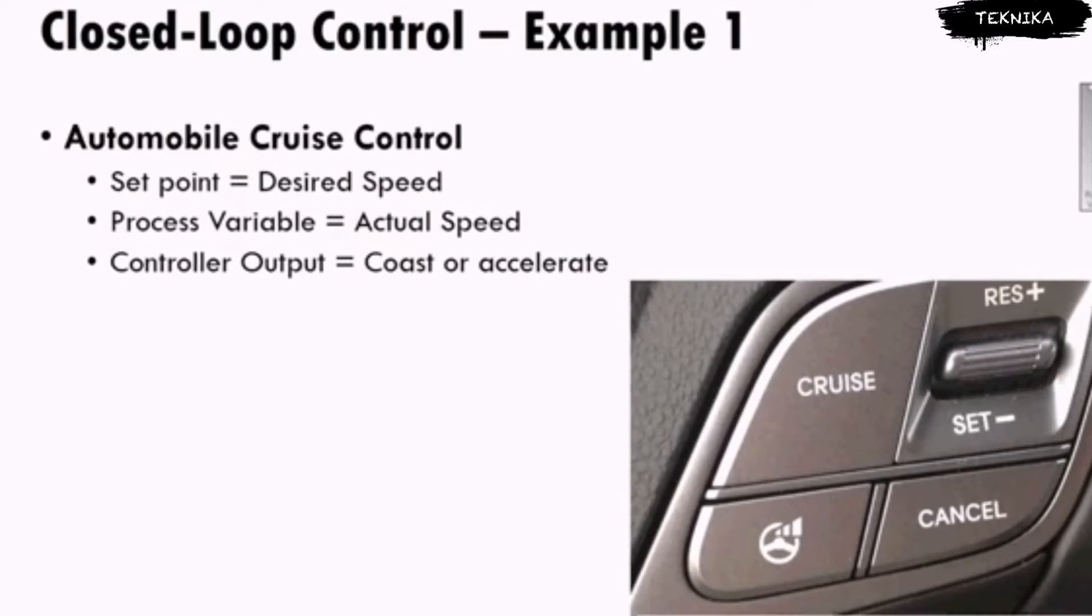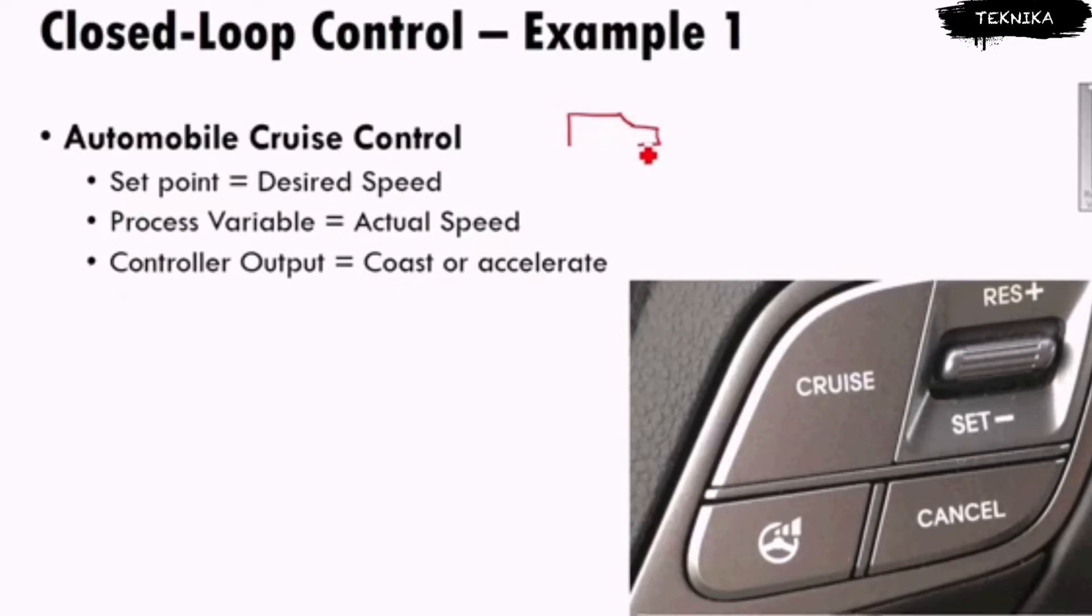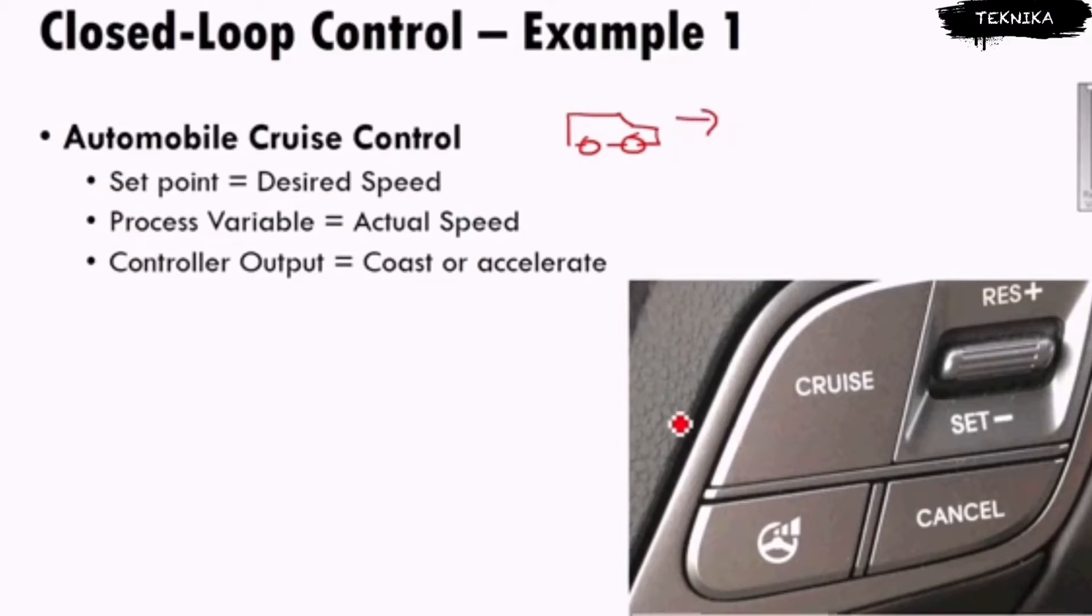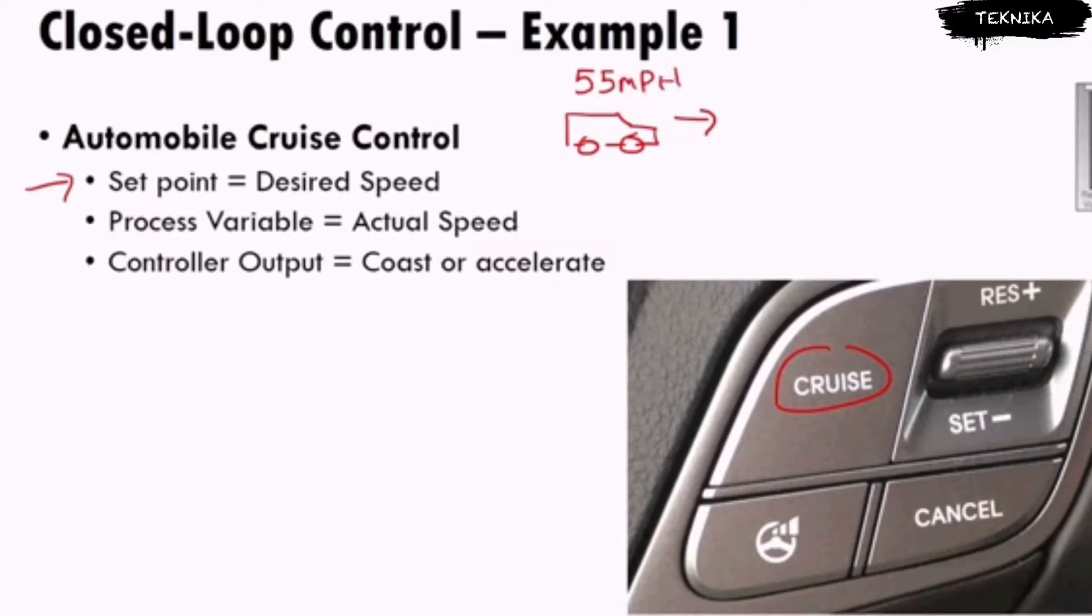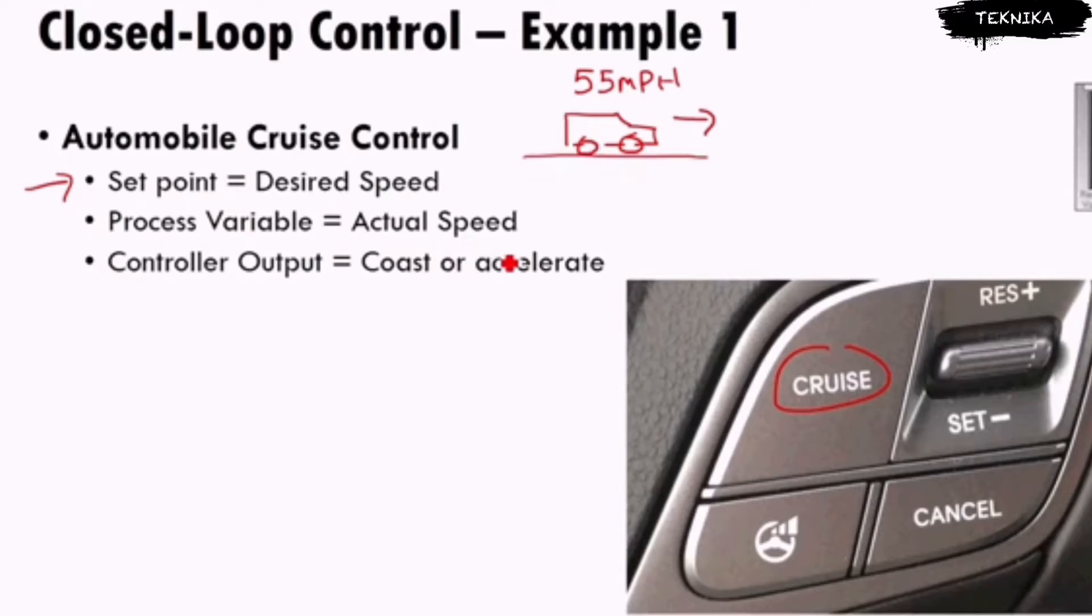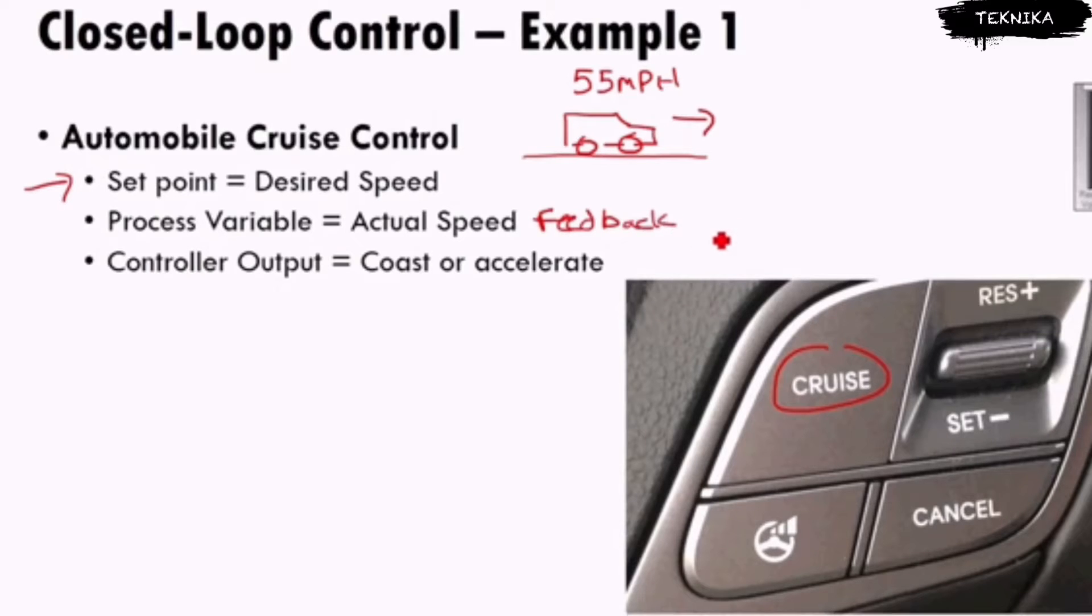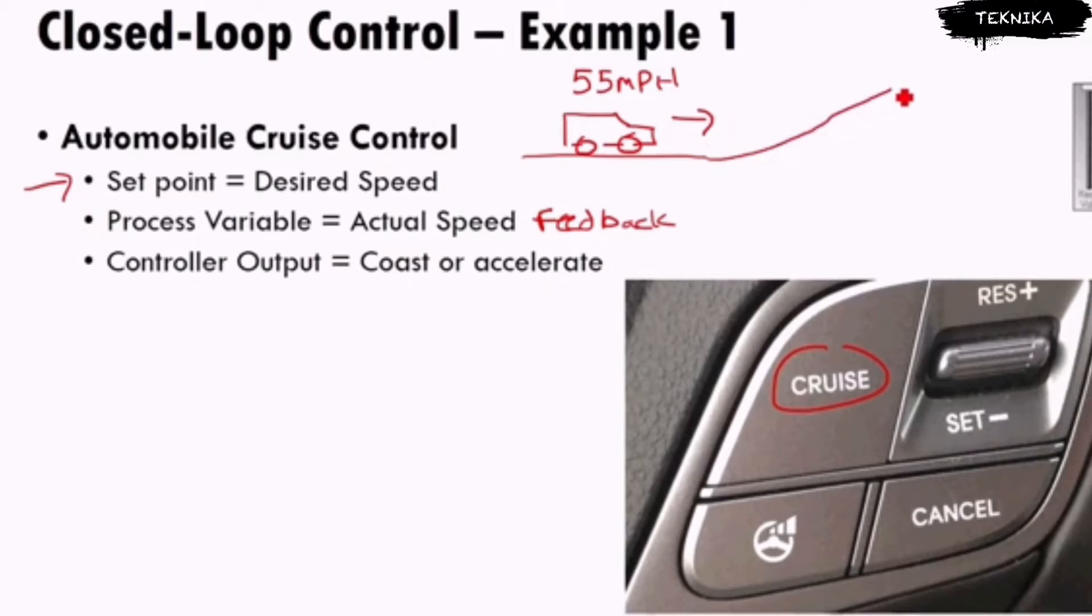A great example is the cruise control on your car. As this car drives down the road, at some point I say I'm going to set my cruise control. I hit set and now I'm set at 55 miles an hour. My process variable is what is my actual speed. If I'm on a nice flat, I might discover I can maintain that 55 miles an hour. This process variable is really the feedback that I'm going to get from the speedometer, from the sensors that are reading my actual speed.